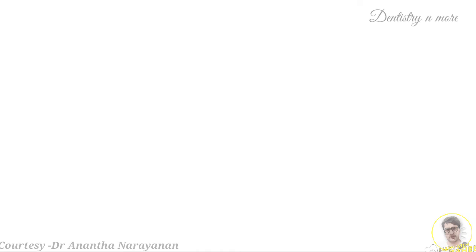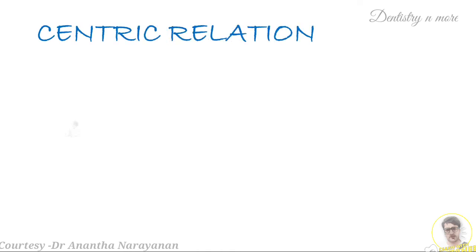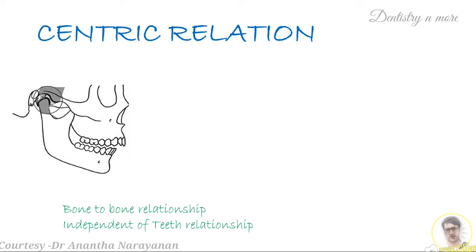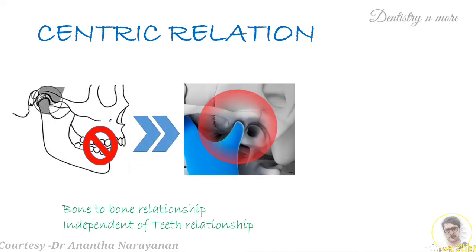Moving on to centric relation — to understand centric relation, take a look at this picture. The picture shows a circle at the condyle and its glenoid fossa, indicating that centric relation is a bone-to-bone relationship. It means that we are not bothered about the teeth or its position when we speak about centric relation. The teeth are completely eliminated and all we are focused on is the condyle and its position in the glenoid fossa.